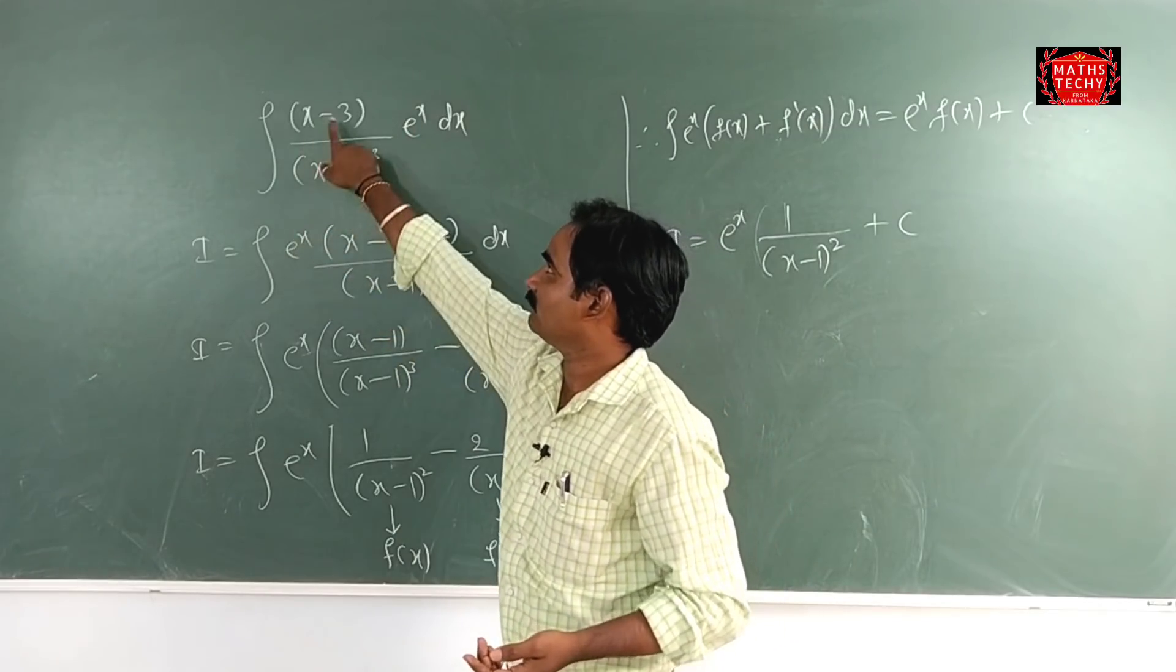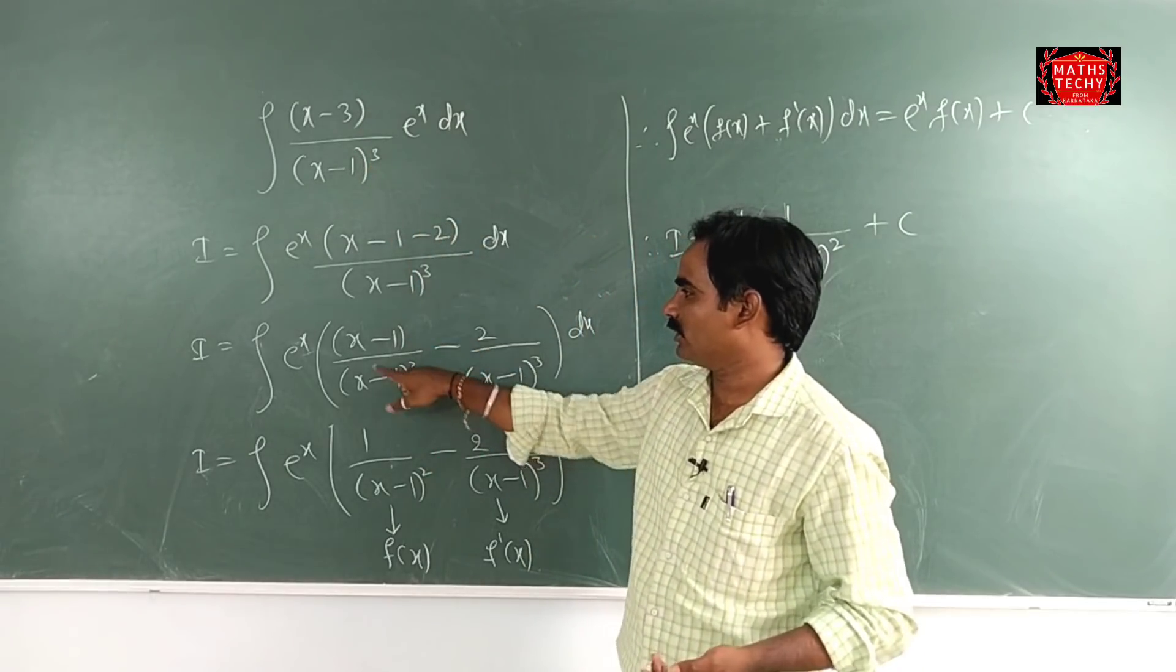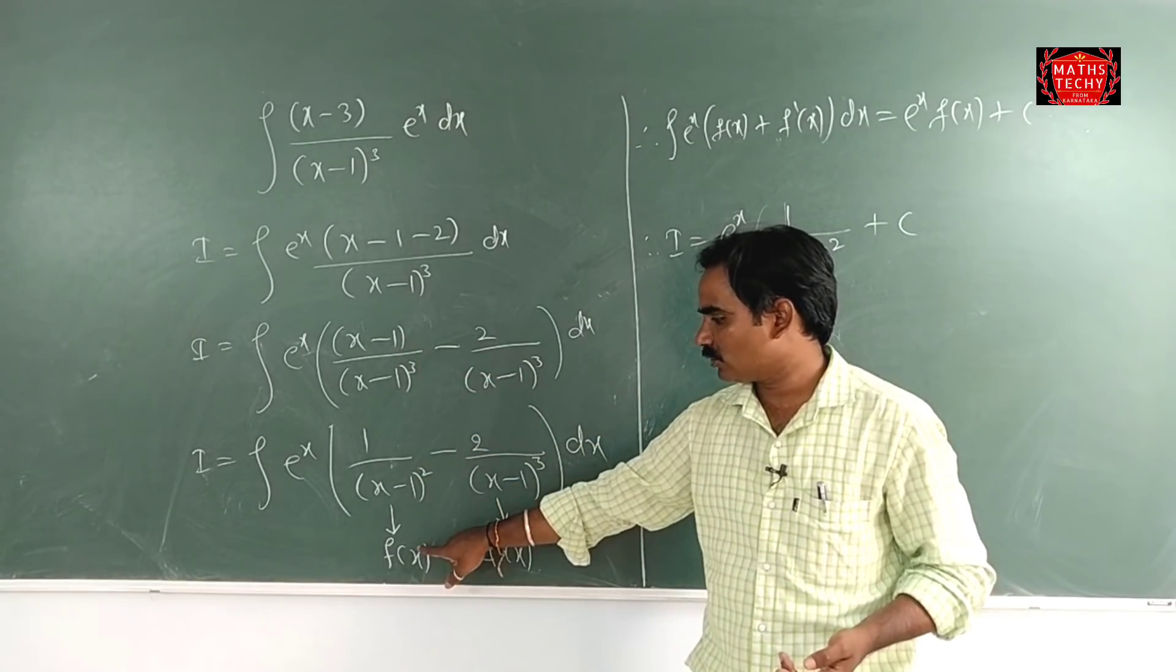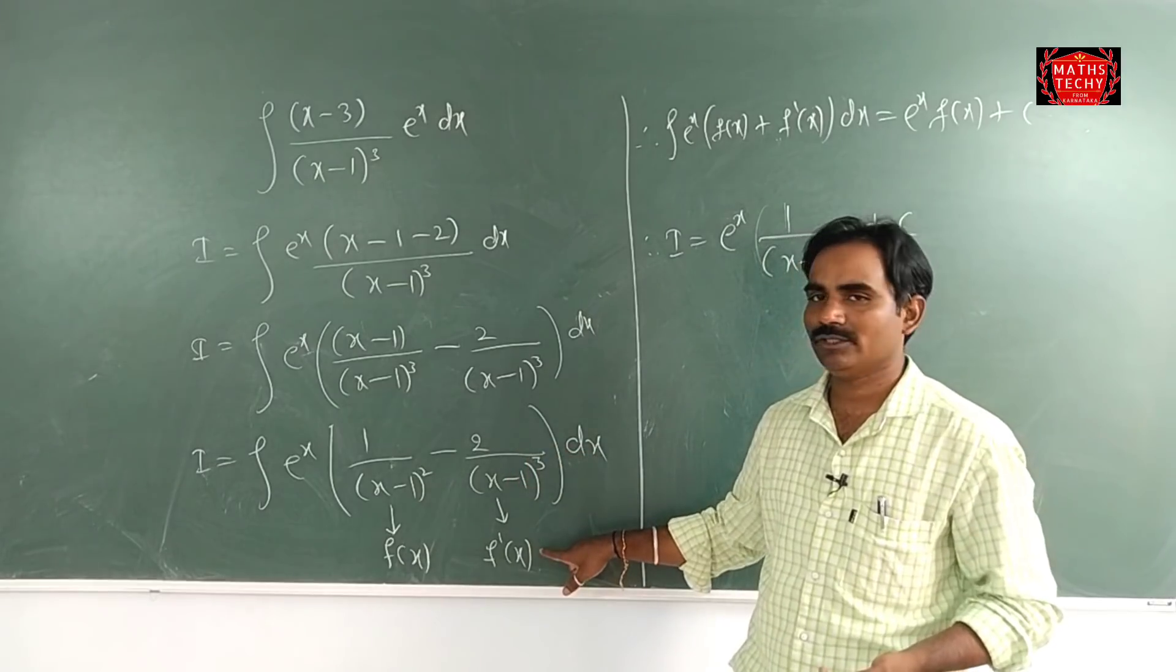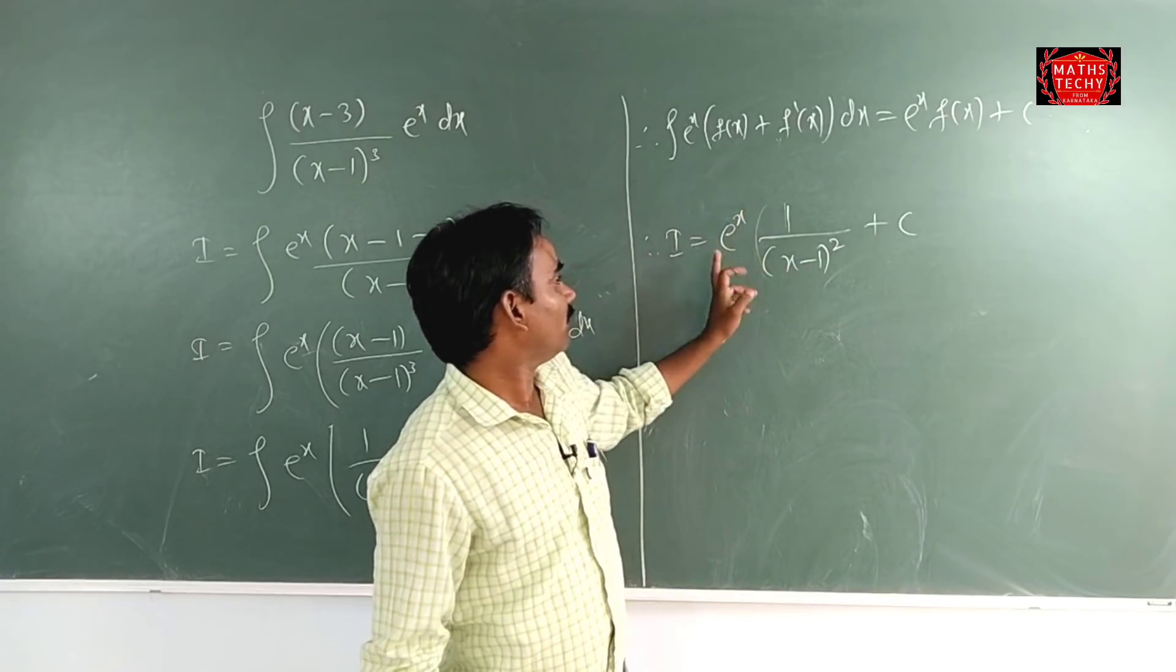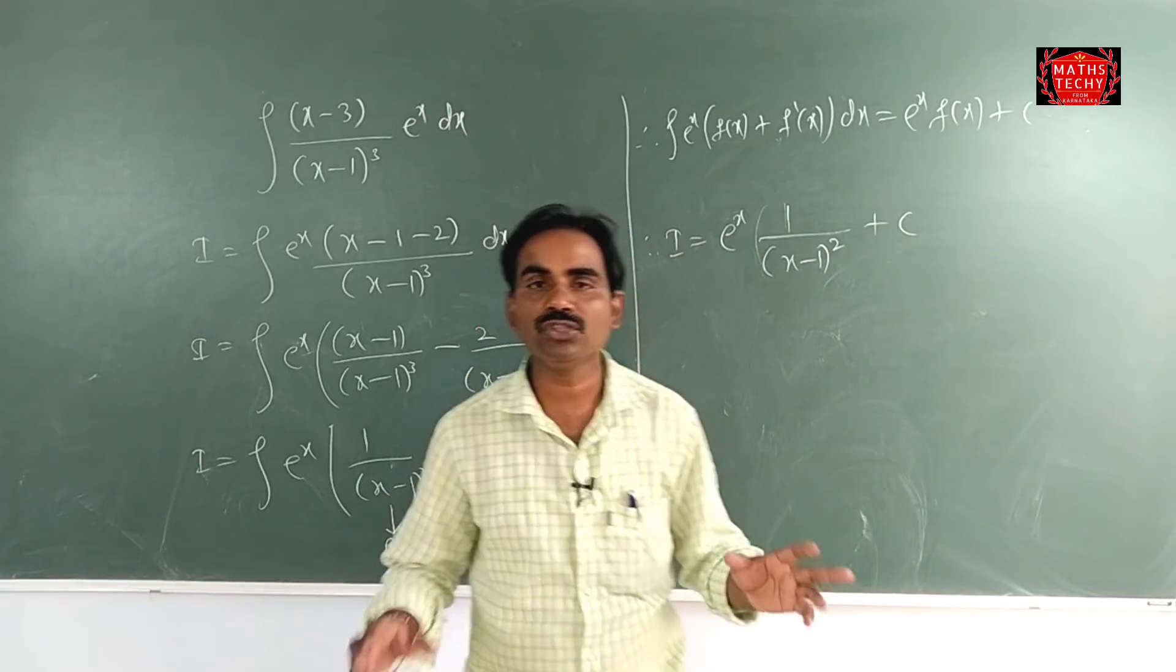So e power of x, minus 3 is split. Minus 1 minus 1 is minus 3. If we have x minus 1 is split, this will cancel. If we have f of x, we have a differentiation. So that means e power of x, f of x, f of x is 1 divided x minus 1 whole square. This is a solution.